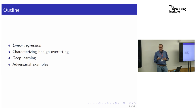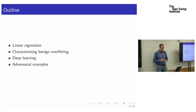I'll have a few comments about how it's related to deep learning, and also to the phenomenon of adversarial examples — which in the linear case is very clear why you should expect adversarial examples when you're in this overfitting regime.